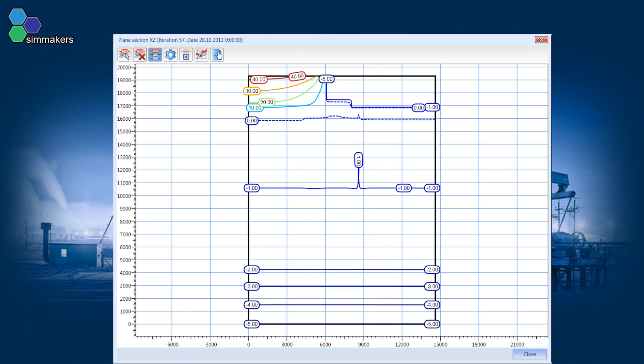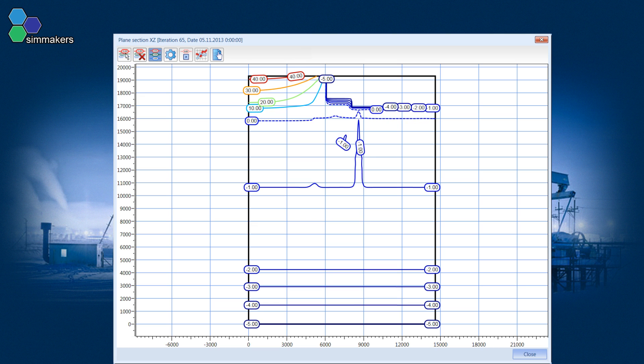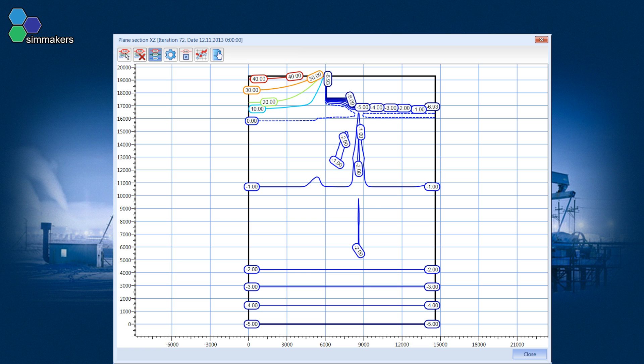The same computational results can be represented clearly in the form of ISO lines on a plane. On the basis of these results, it is possible to obtain any parameter.